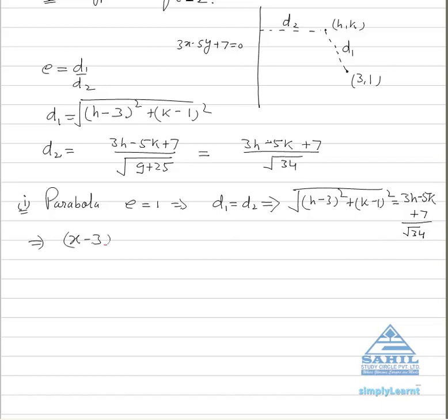It is (x minus 3) whole square plus (y minus 1) whole square equals (3x minus 5y plus 7) upon 34, and (3x minus 5y plus 7) whole square. Got this or not? I think that is very easy.